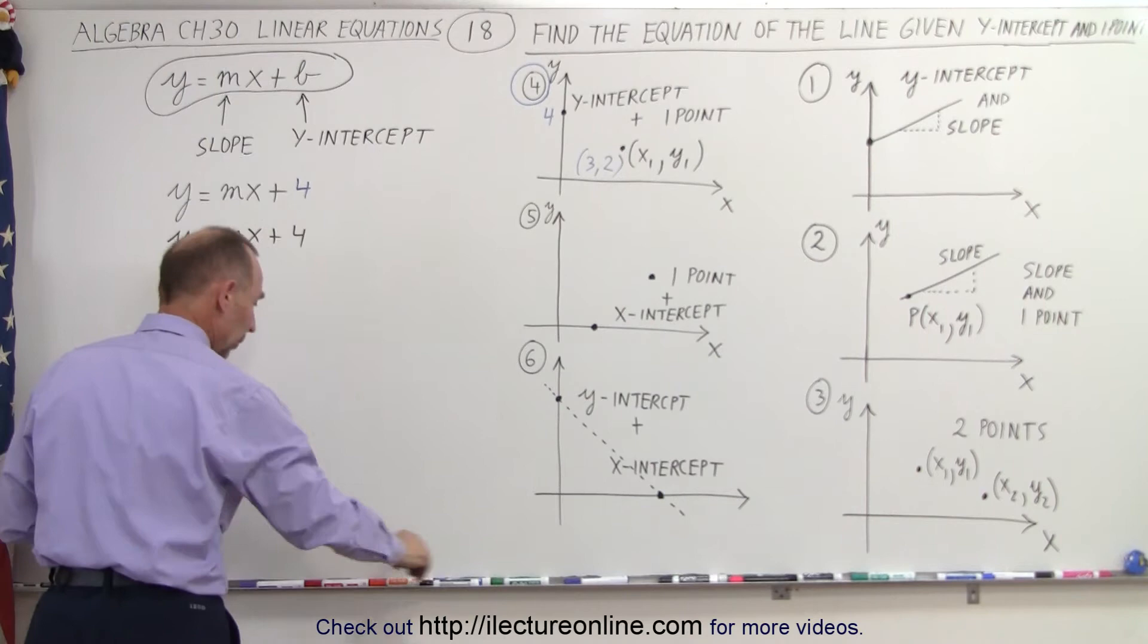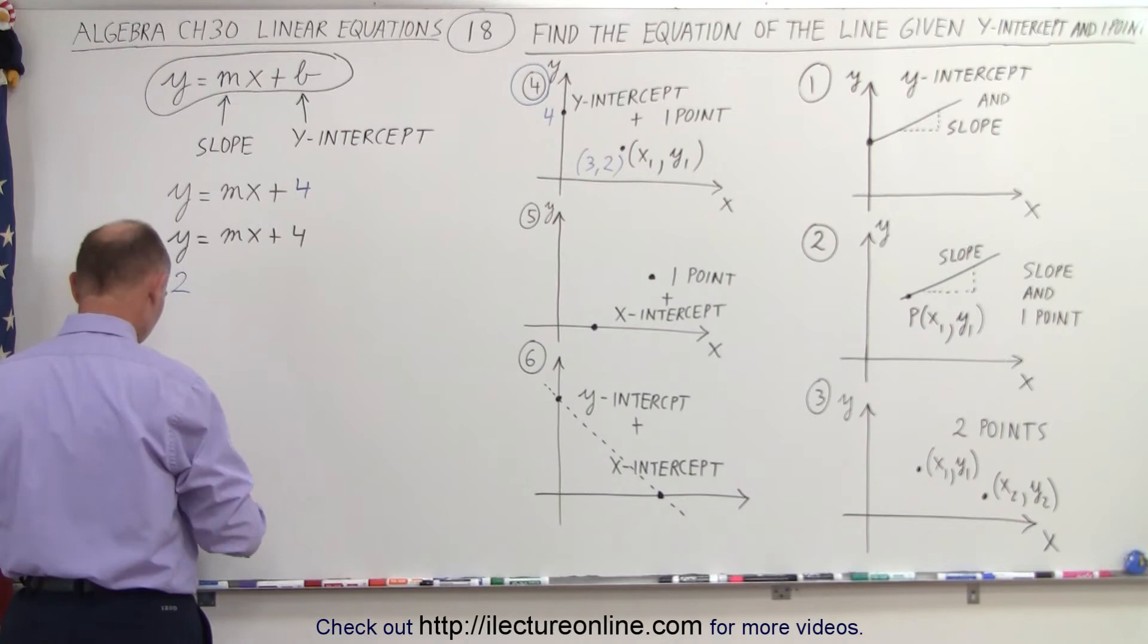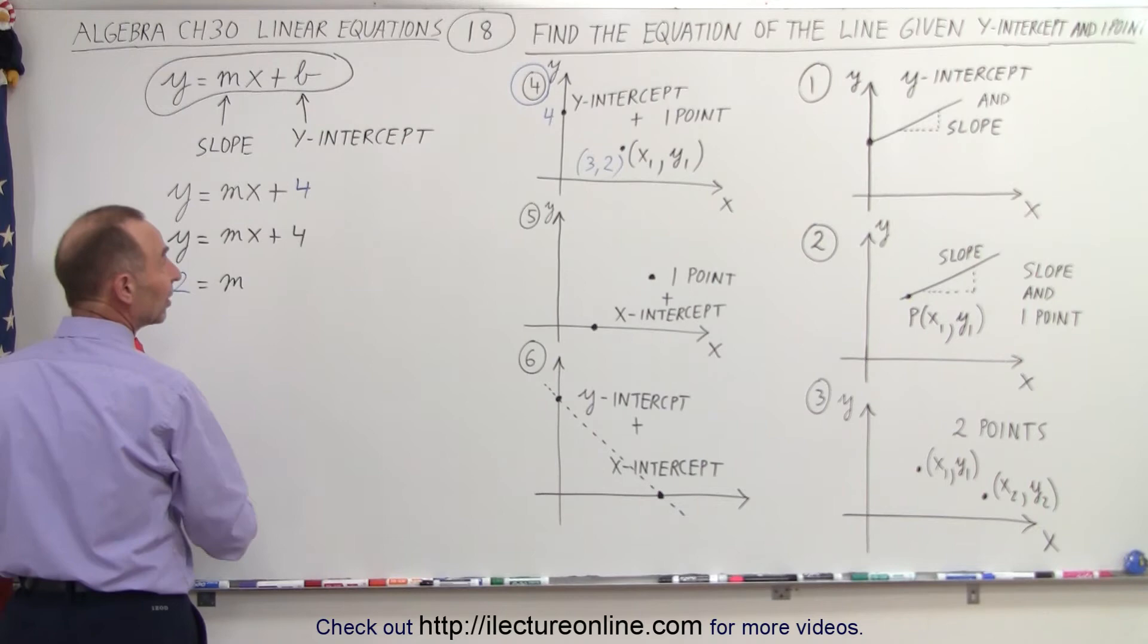So then we get the following. So we see that y is equal to 2. So we write 2 is equal to m times x, and x is equal to 3, and plus 4.